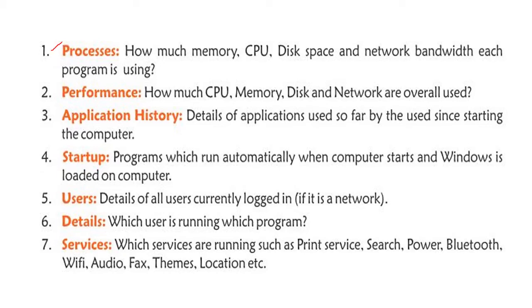Processes tab में हम यह जानते हैं कि जो भी programs run कर रहे हों, उनमें कितनी memory लग रही है, CPU का कितना use हो रहा है, disk space का कितना use हो रहा है, और network bandwidth का कितना use हो रहा है। It shows how much memory, CPU, disk space, and network bandwidth each program is using.